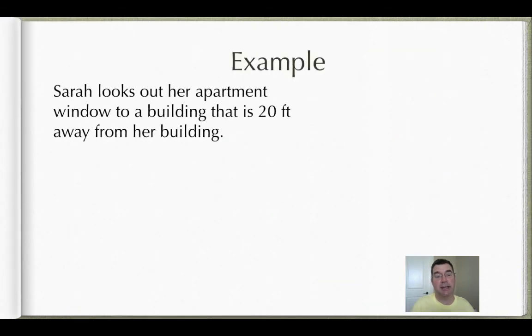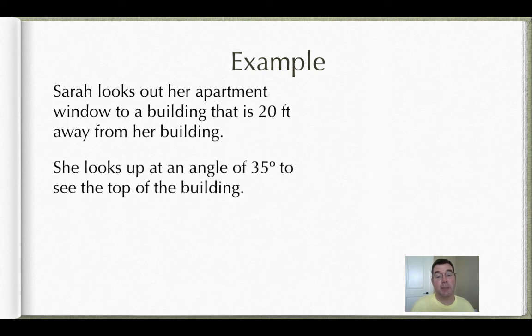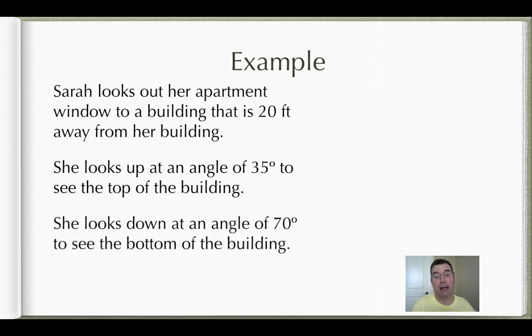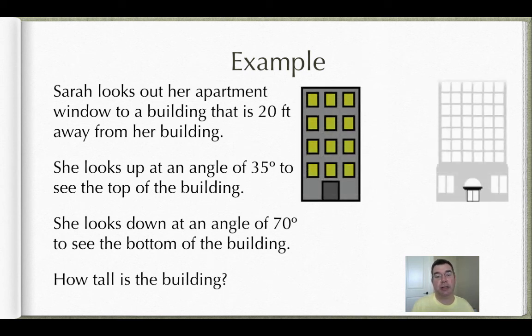So here's an example. We have Sarah looking out her apartment window to a building that's 20 feet away from her building. She looks up at an angle of 35 degrees to see the top of the building, and she looks down at an angle of 70 degrees to see the bottom of the building, so how tall is the building? Let me draw a picture. Here is Sarah's building and the other building, so she's looking across 20 feet if she looks straight across.